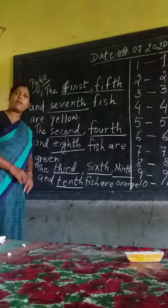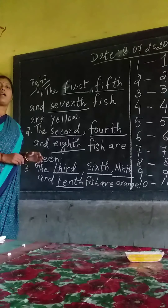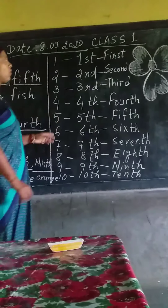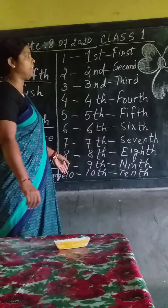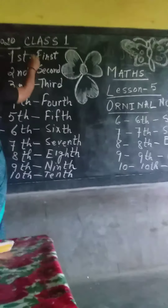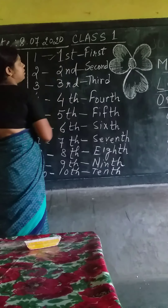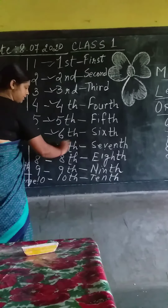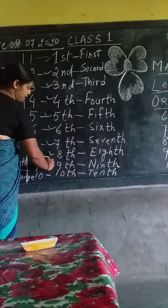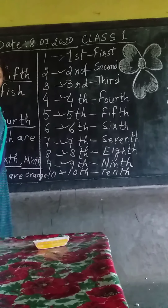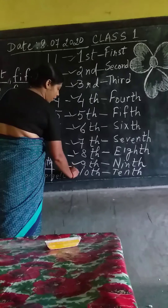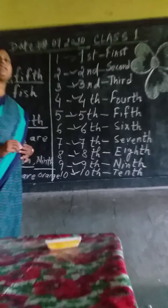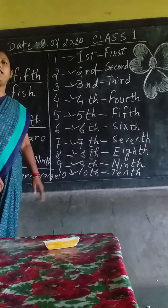Children, if you don't have your copies, no need to write down — write in the book itself. So, once we revise from first to tenth: first, second, third, fourth, fifth, sixth, seventh, eighth, ninth, tenth. You should know the spelling from first to tenth of ordinal numbers. Please learn the spelling from first to tenth.